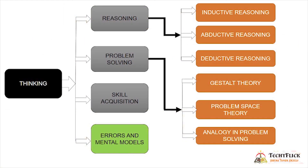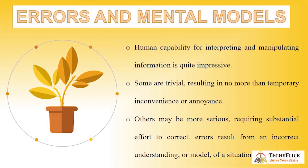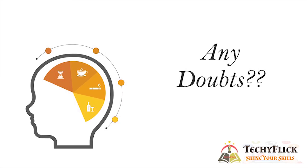Errors and Mental Models: Human capability for interpreting and manipulating information is quite impressive, yet errors occur. Some are trivial, resulting in no more than temporary inconvenience or annoyance. Others may be more serious, requiring substantial effort to correct. Errors result from an incorrect understanding or model of a situation or system. If you have any doubts, leave your questions in the comment section. Thank you.